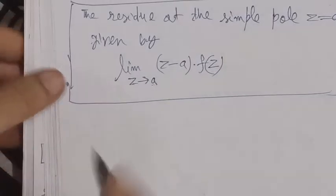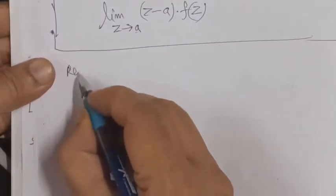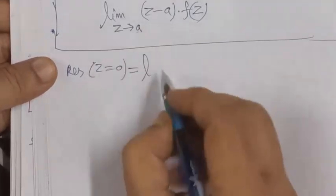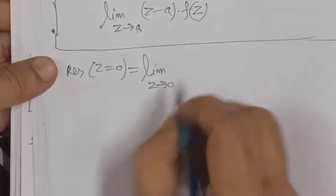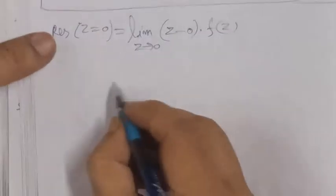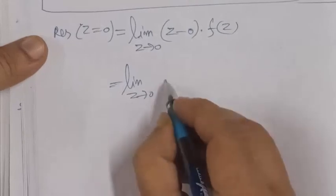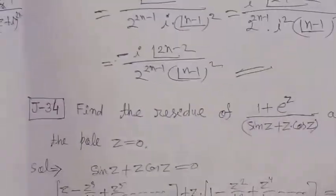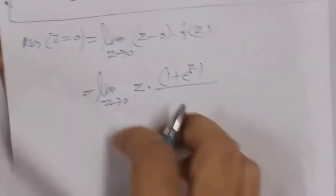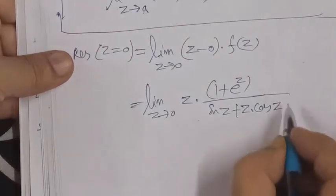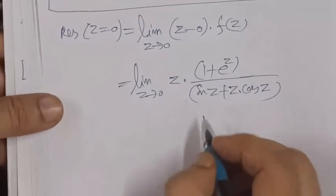To find the residue at z = 0 for a simple pole, we use the formula: limit as z tends to 0 of z times f(z). The function f(z) is (1 + e^z) / (sin z + z cos z). Substituting these values, we need to solve this limit.